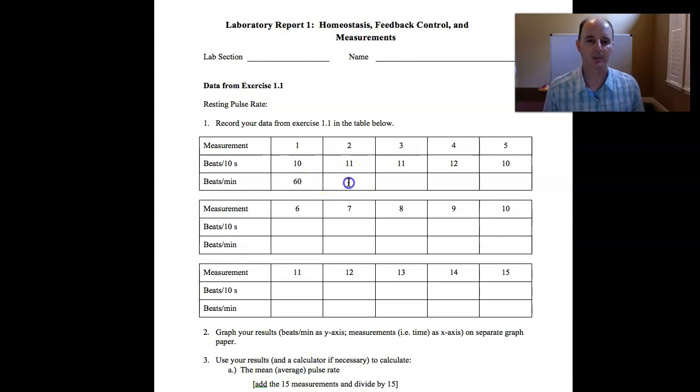The second one would be 11 times 6, that would be 66. The third one would also be 66. The fourth one, 12 times 6, would be 72. And the fifth one would be 60 again. What you're seeing in the data is already a fluctuation in the values. Even though you're taking resting heart rate, you're seeing an increase and a decrease or a dynamic constancy in the data. You'll see that as you continue on through all 15 measurements and all of your beats per minute data.